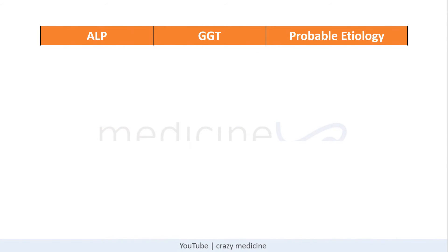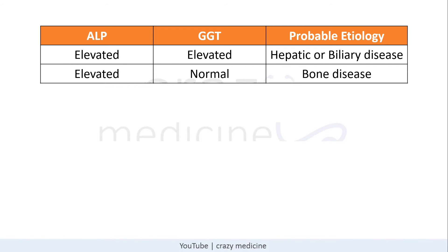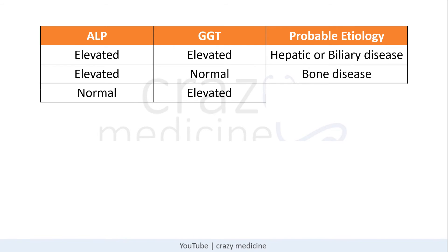Interpreting the combination of ALP and GGT: if both ALP and GGT are elevated, the probable cause is hepatic or biliary disease. If ALP is elevated with normal GGT, the probable cause is bone disease. If ALP is normal with elevated GGT, the probable cause is alcohol abuse. These were the causes of raised ALP and GGT.